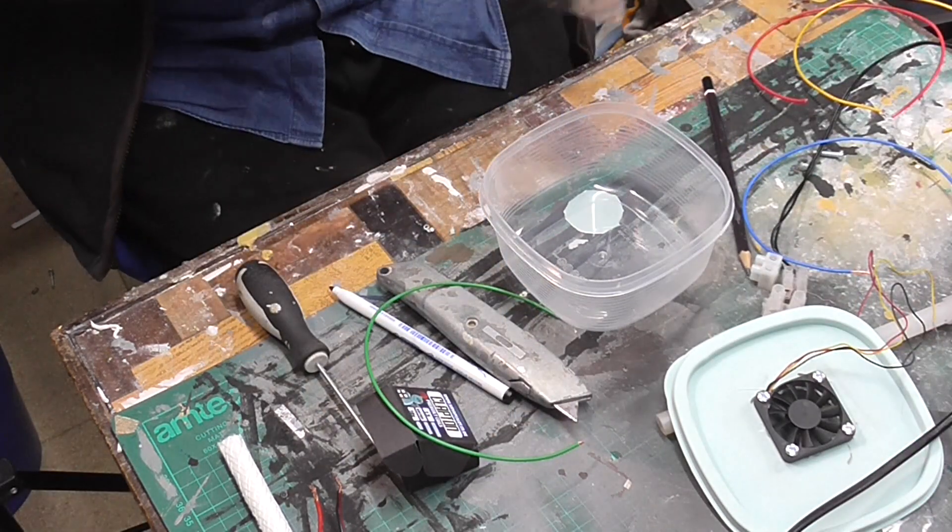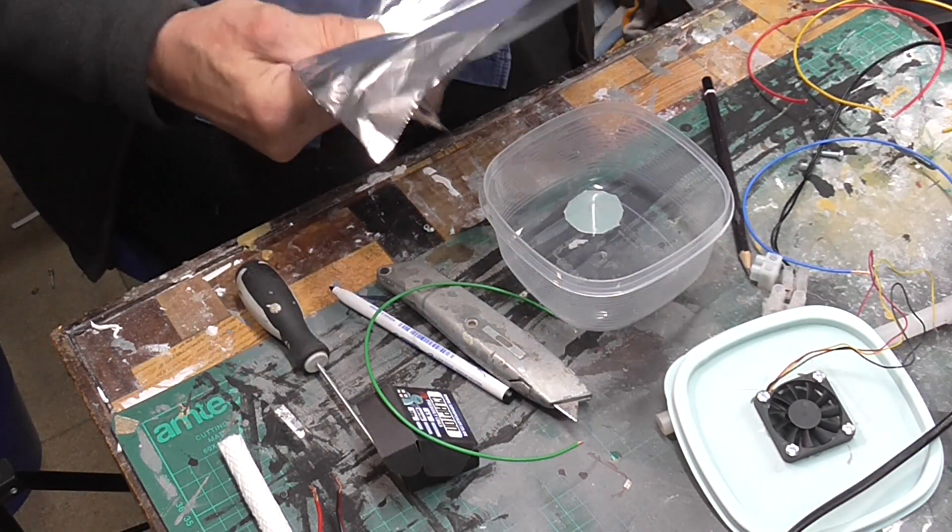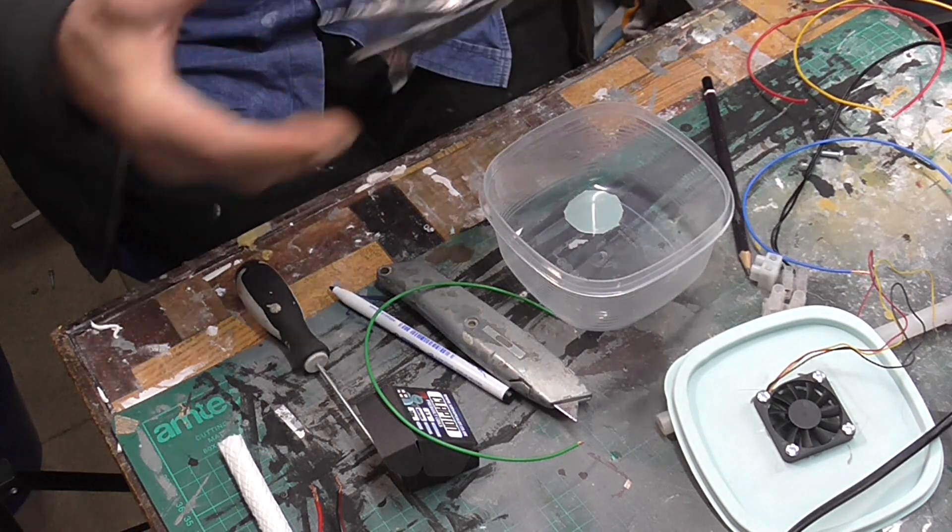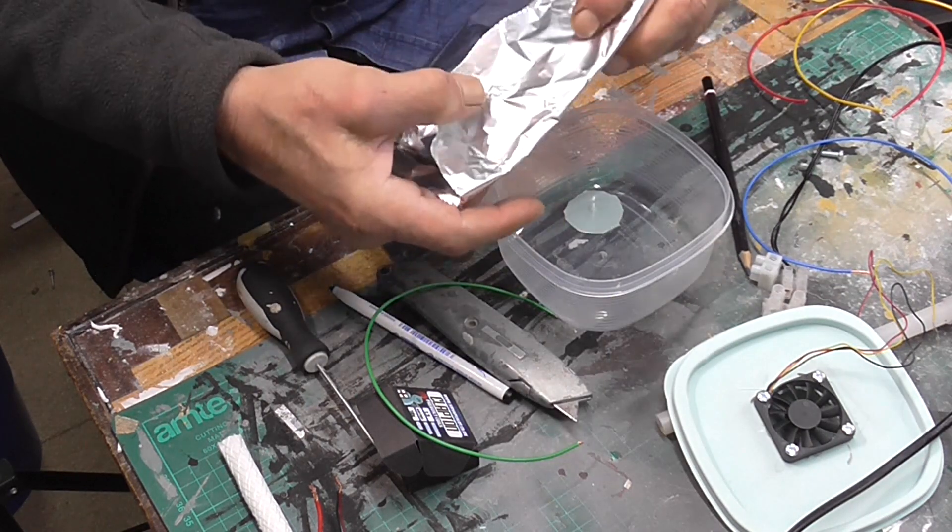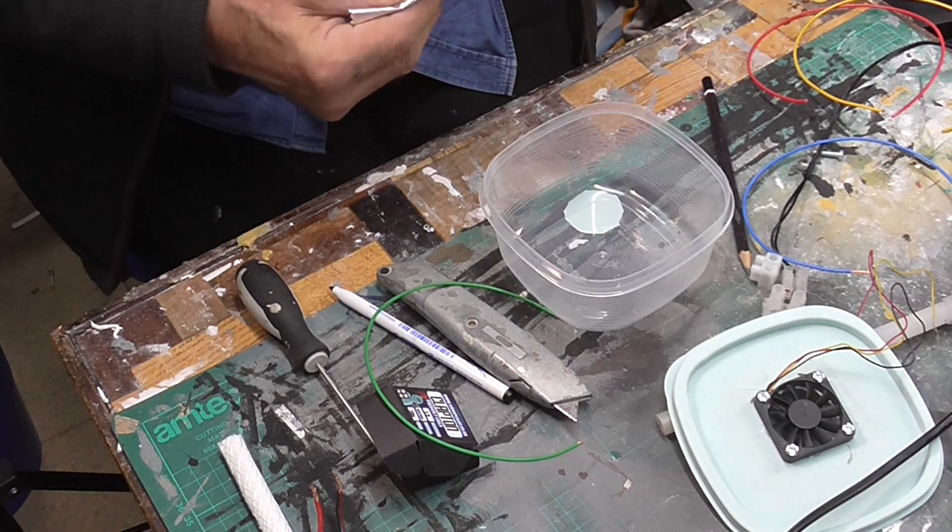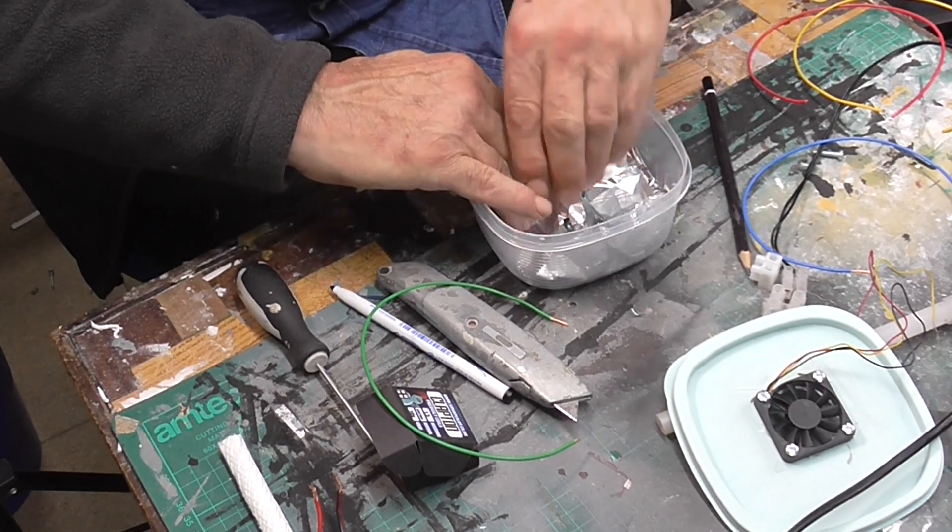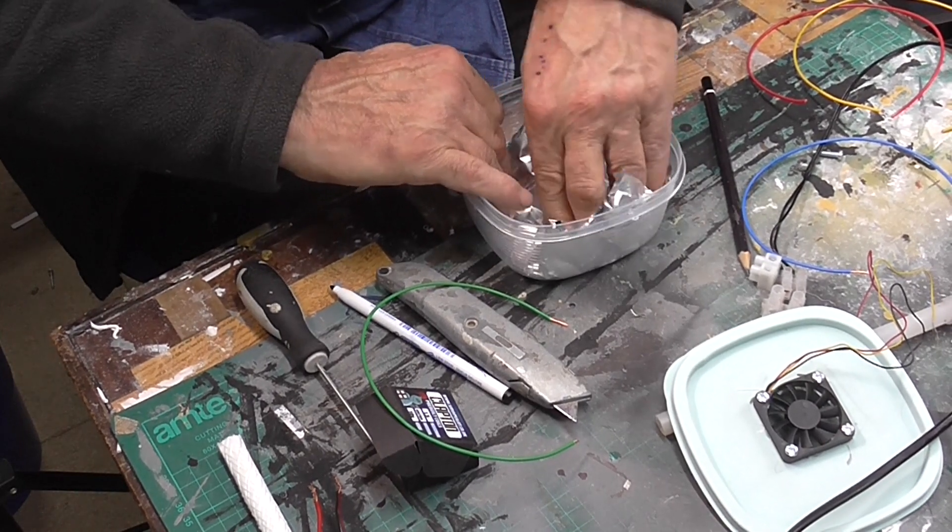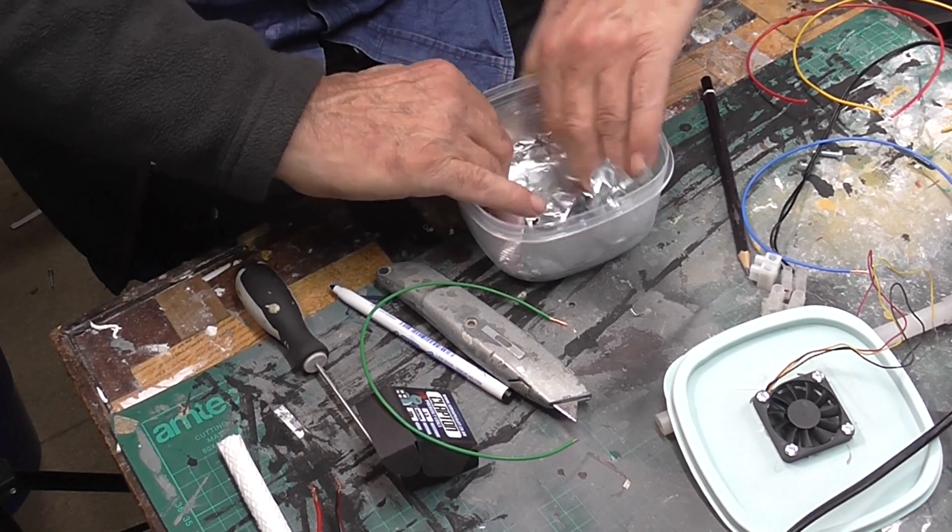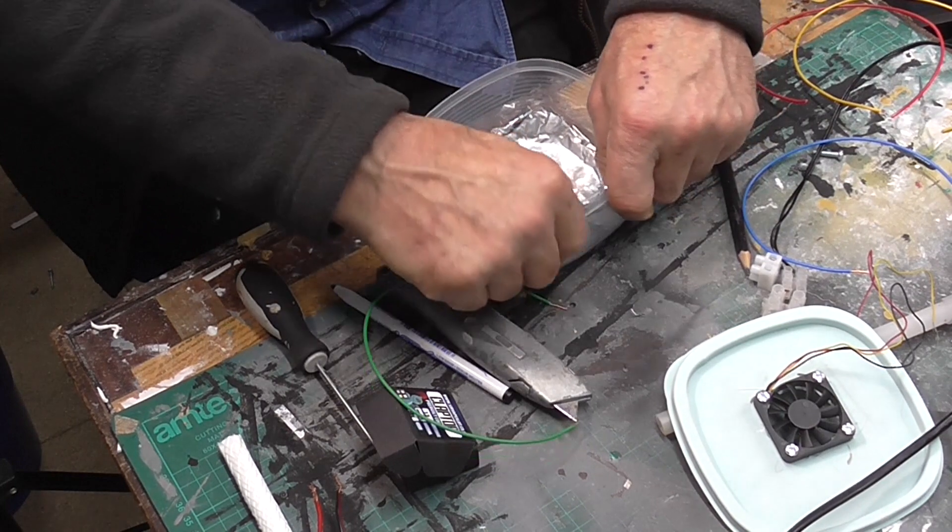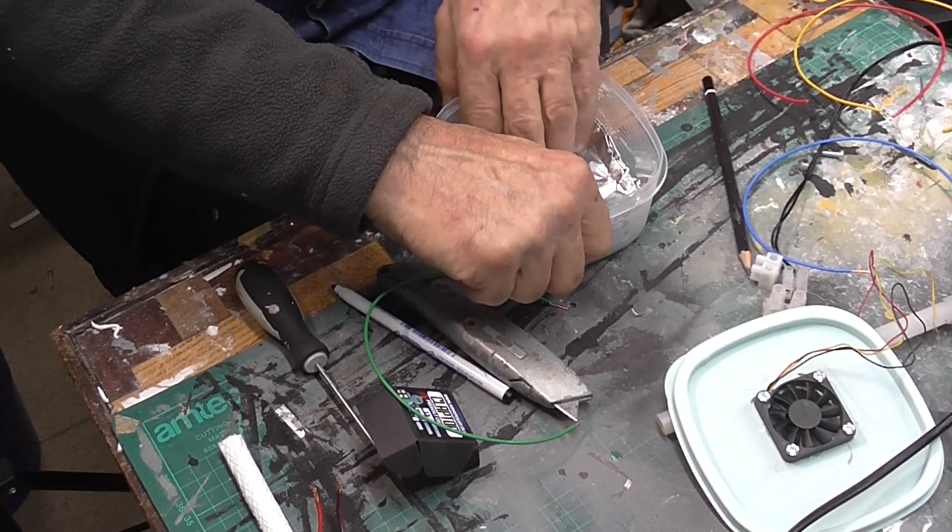But before I do that, I'm going to line the base with some aluminium foil. It just stops, if there is a bit of heat coming off the element, it stops it burning out through the bottom.